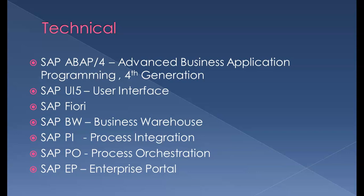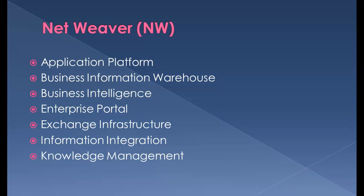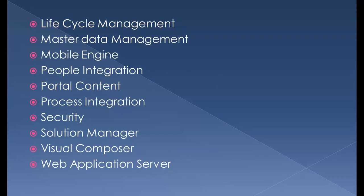Additional technical modules include PI for Process Integration, PO for Process Orchestration, and EP for Enterprise Portal. The SAP NetWeaver application platform includes Business Intelligence — also called Business Warehouse in the latest version — Enterprise Portal, Exchange Infrastructure, Information Integration, Knowledge Management, Lifecycle Management, Master Data Management, Mobile Engine, People Integration, Portal Content, Process Integration, Security, Solution Manager, Visual Composer, and Web Application Server.